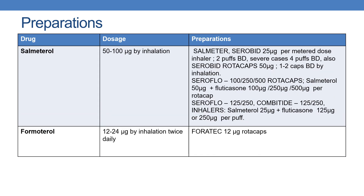The next drug is salmeterol. The dose is 50 to 100 mcg by inhalation. The preparations are Salmeter and Serobid, available as 25 mcg per metered dose inhaler, 2 puffs twice daily. In severe cases, 4 puffs twice daily. Also Serobid rotacaps, which contain 50 mcg, 1 to 2 caps twice daily by inhalation.